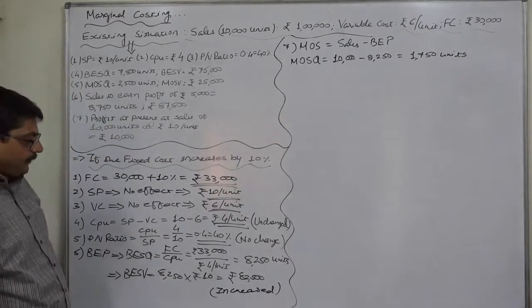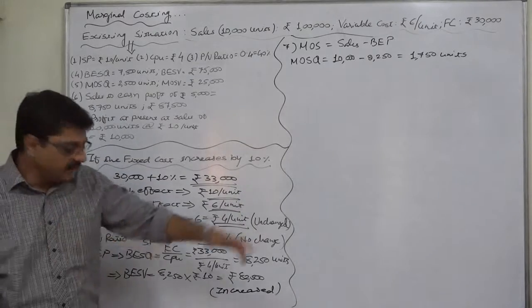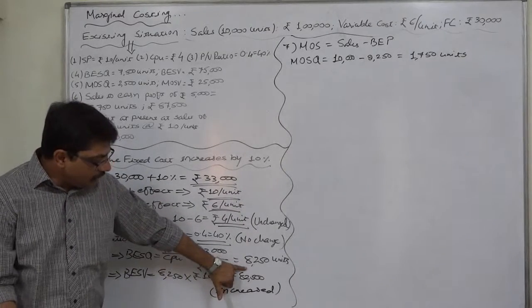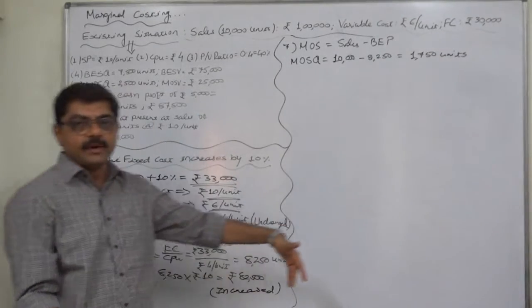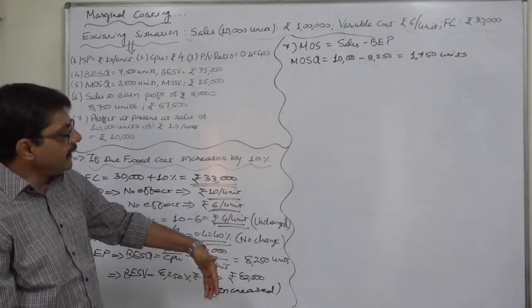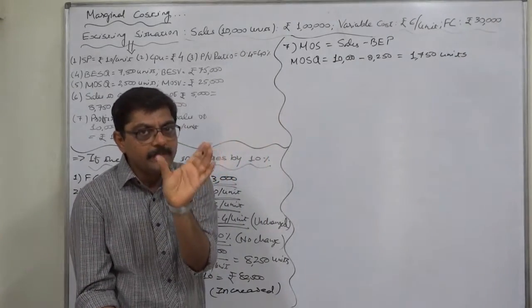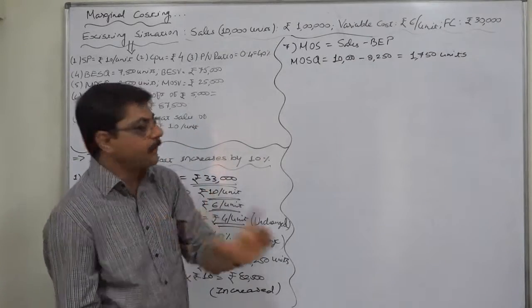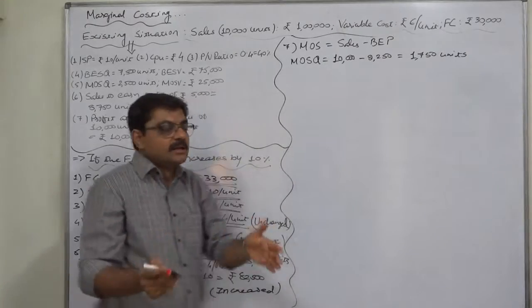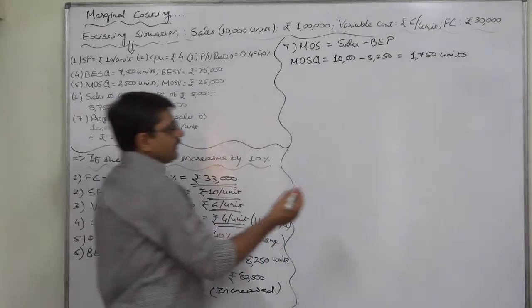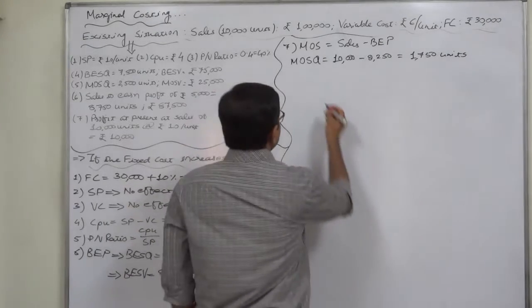So the first conclusion is, if the sales activity is taken as a journey, the stage of profit-making has gone far from the existing point. Similarly, the sales beyond BEP or the sales which gives the actual profit has decreased. So it is not in favor of the financial health of the company.